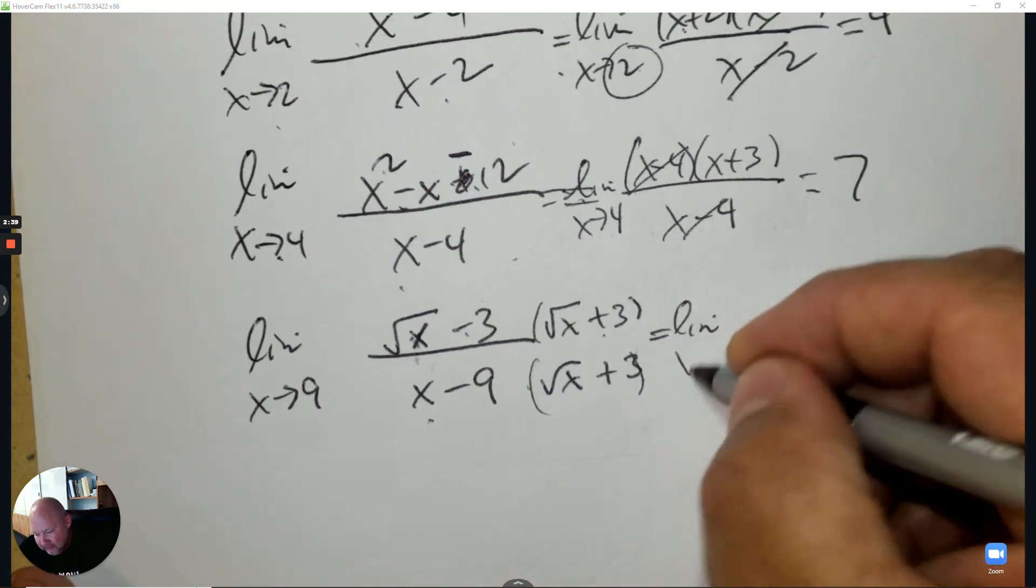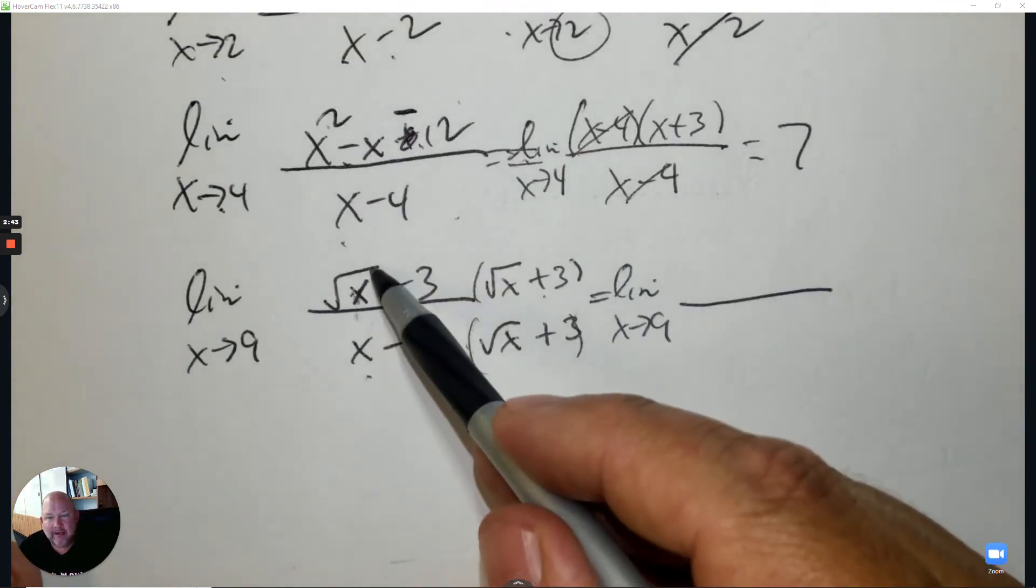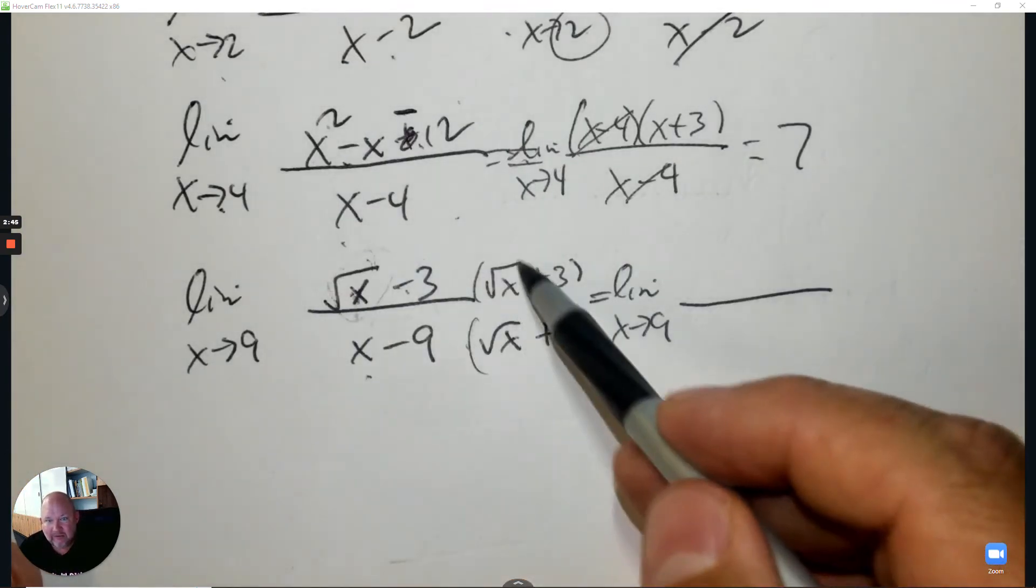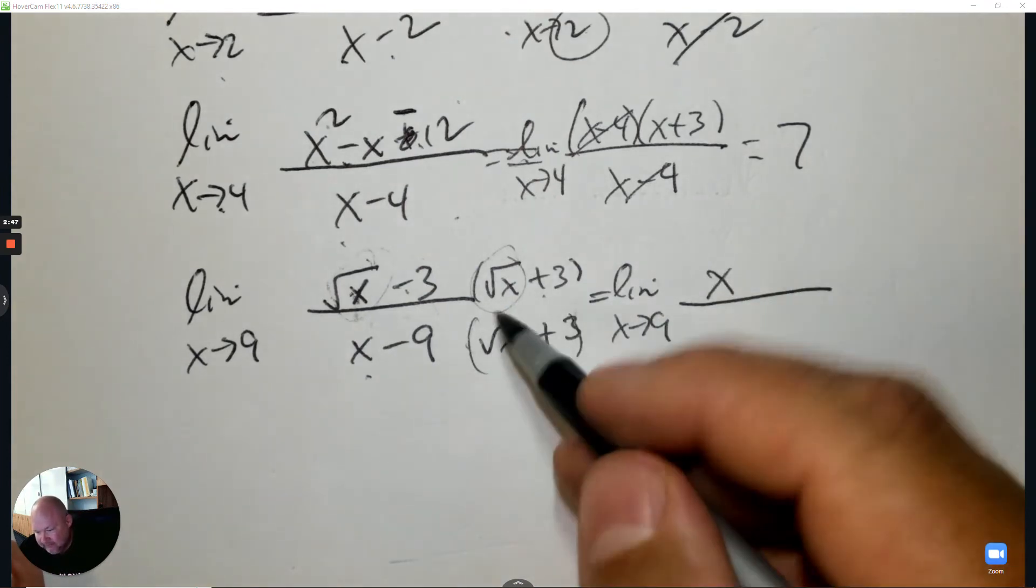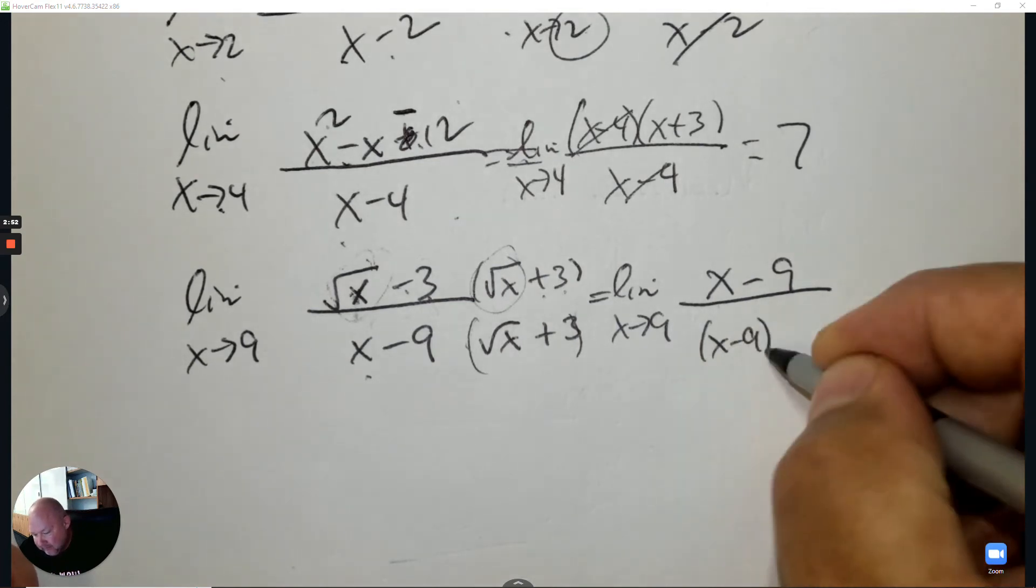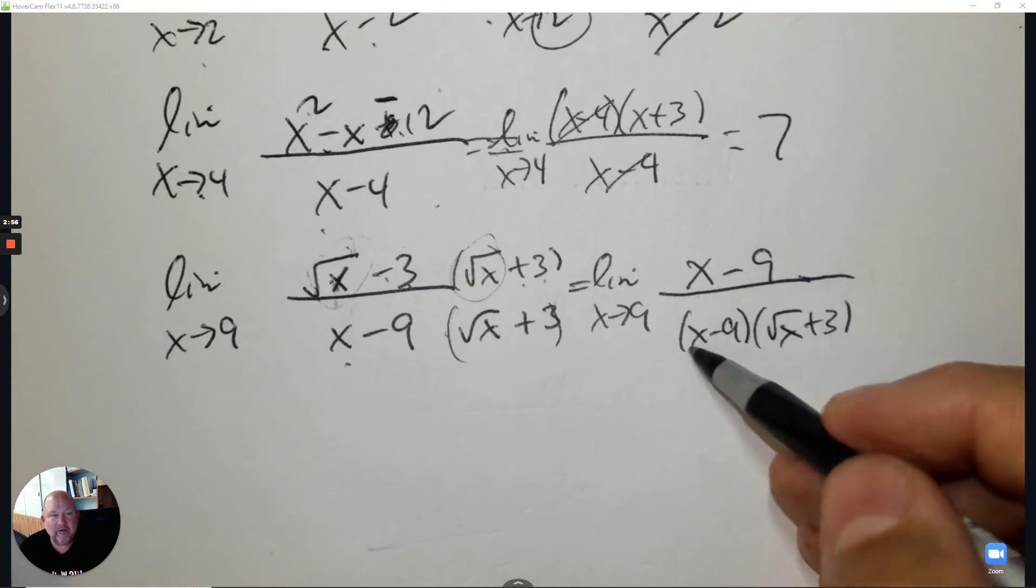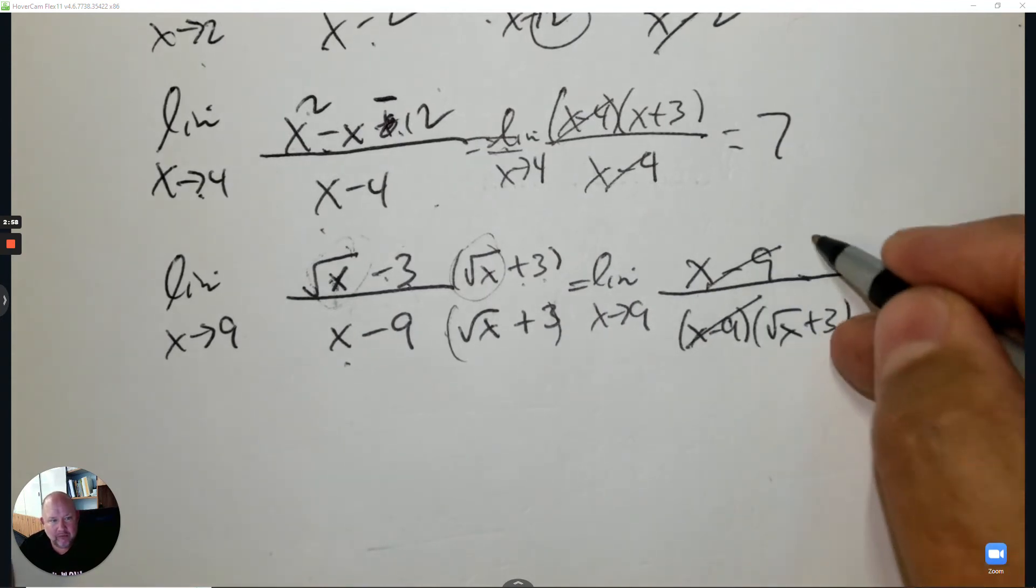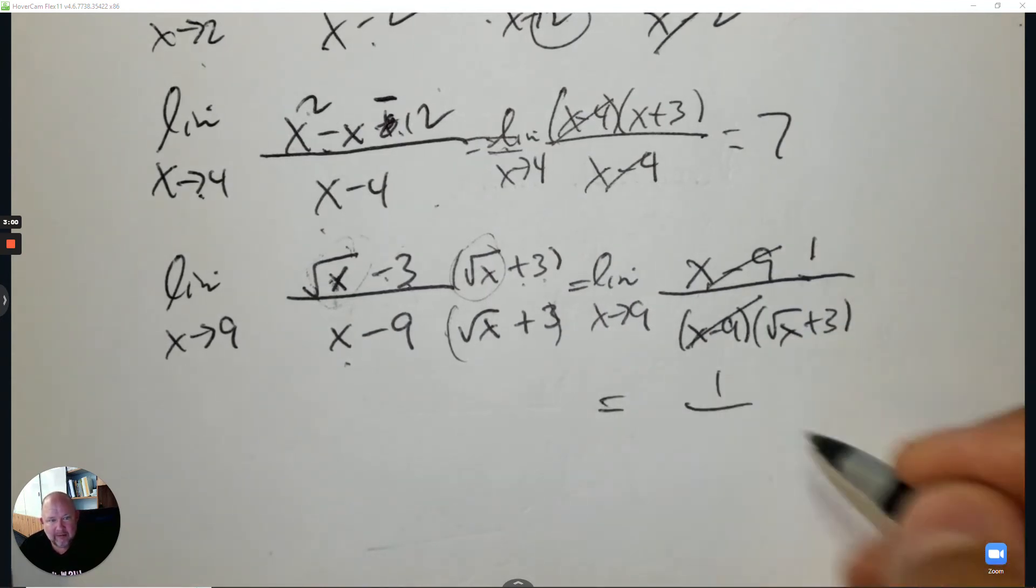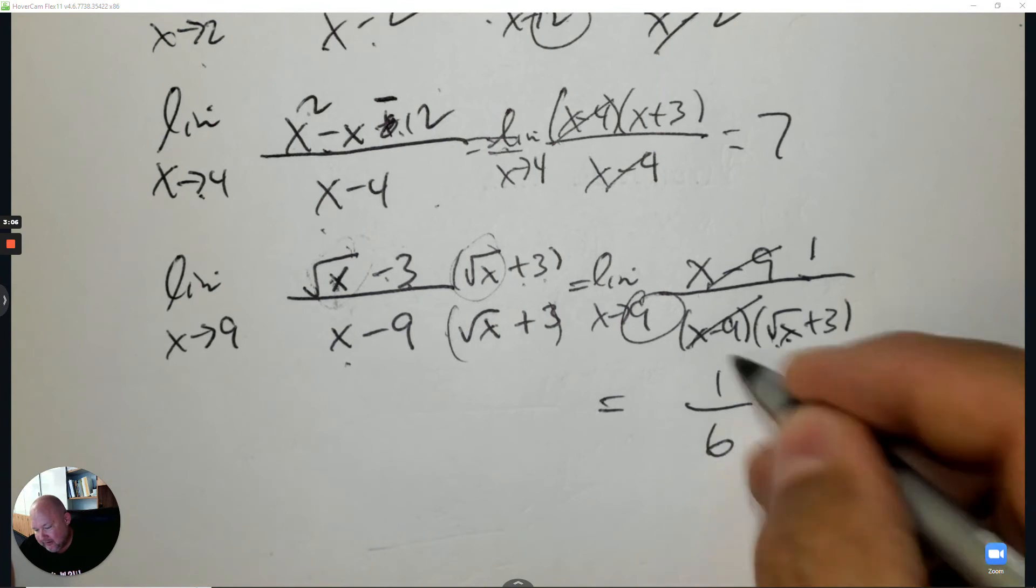Write the limit notation and multiply. Root x times root x is x, and negative 3 times 3 is negative 9. For the denominator, put them beside each other. Notice how it now removes, there's a 1 on top. You can plug 9 in to get your answer. The square root of 9 is 3, and 3 plus 3 is 6.